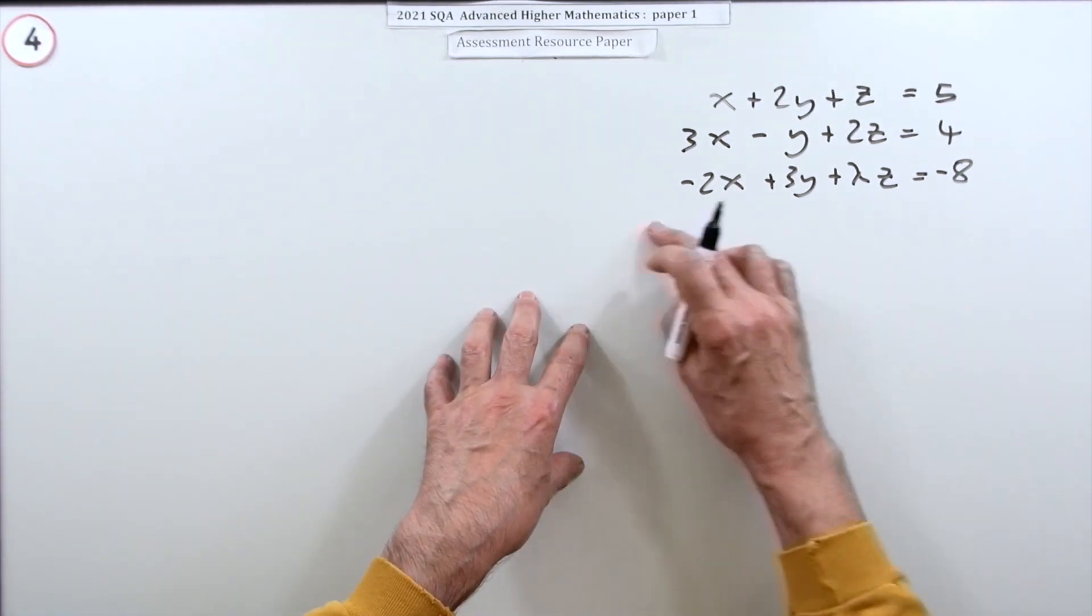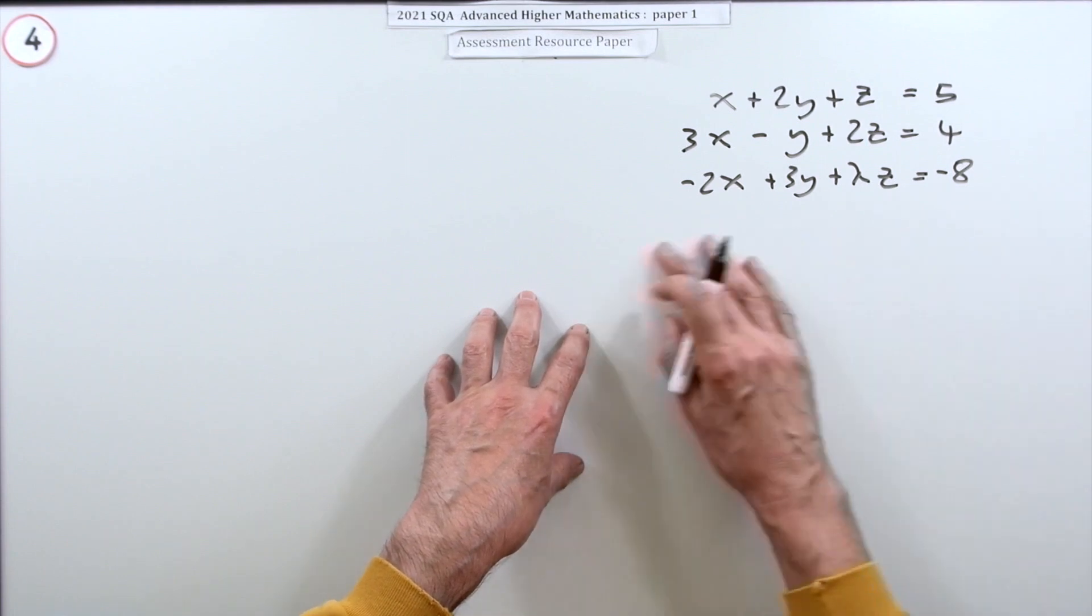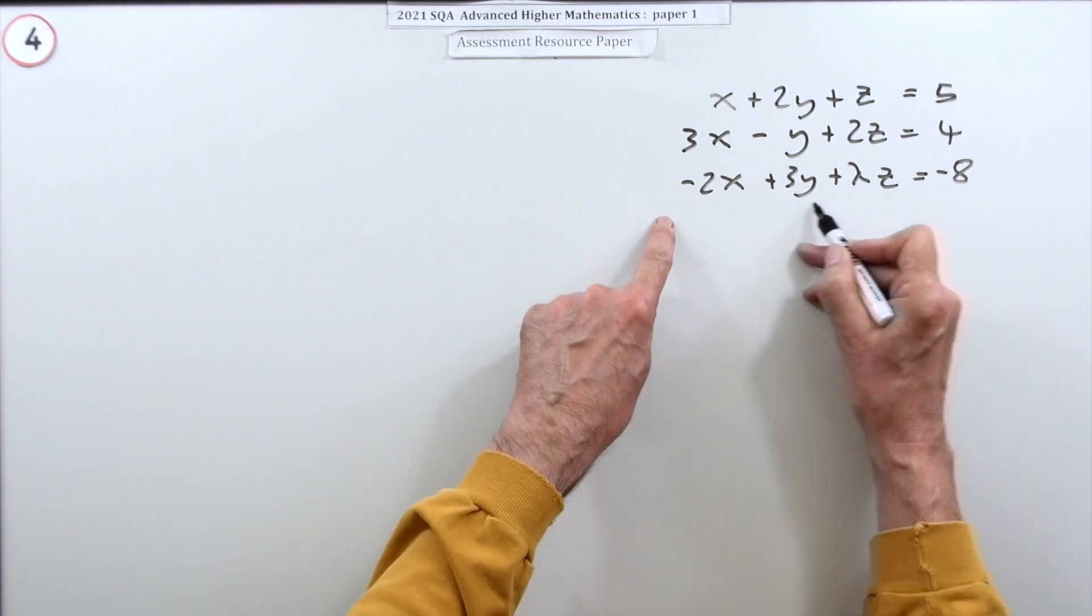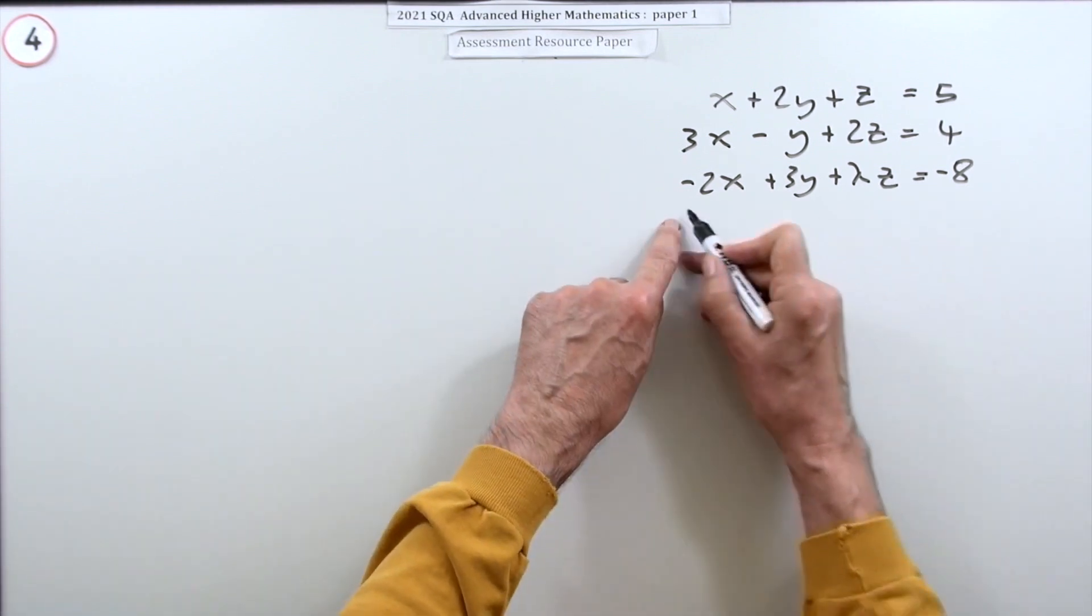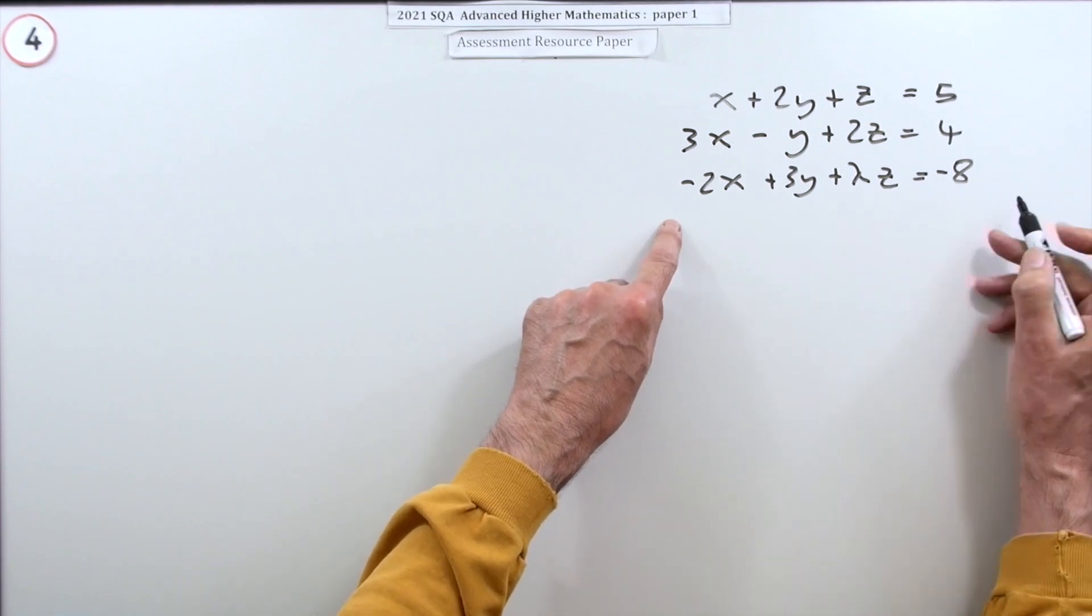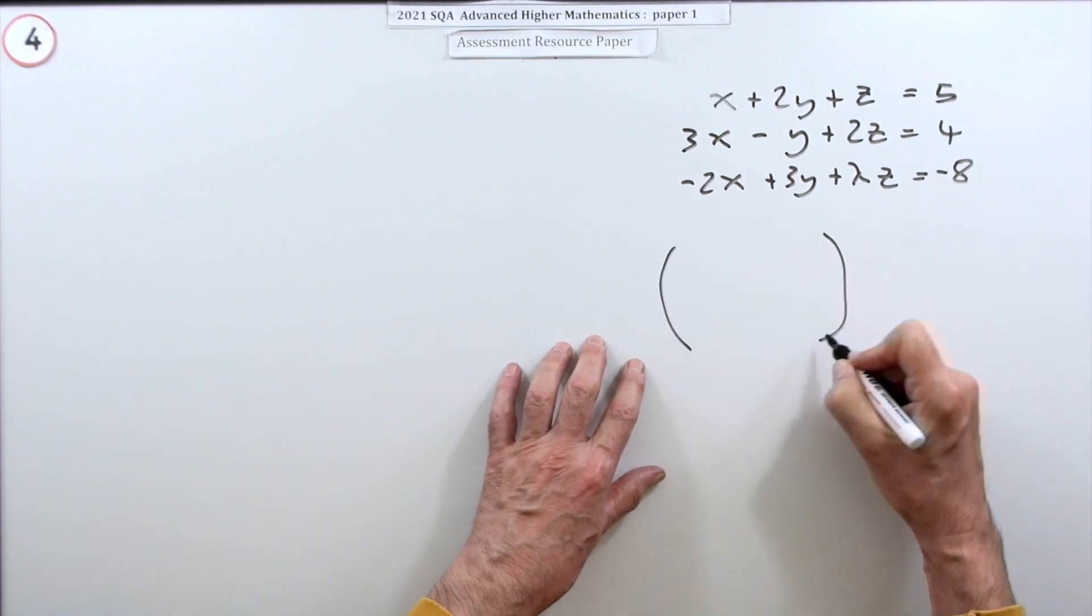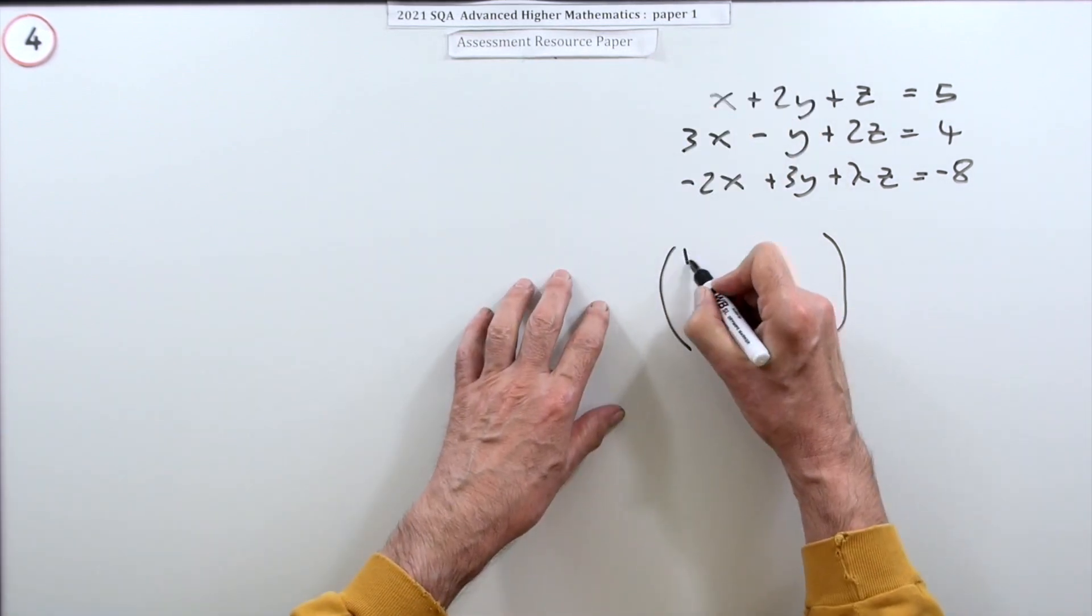It's also a shorthand of, if you like, the formal technique of matrix equations would be this. That could be written as a matrix equation by collecting the coefficients into a single matrix.